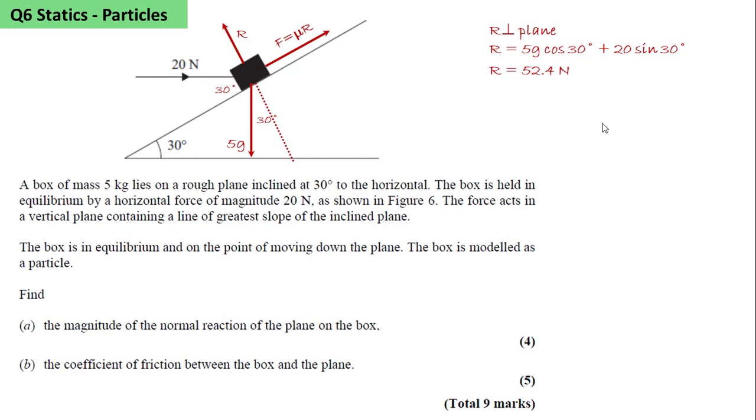Resolving along the plane, we get that the friction equals 5g sin 30 minus 20 cos 30. And we calculate the friction is 7.205 Newtons. And μ equals F over R equals 0.137.